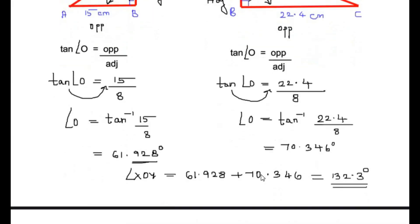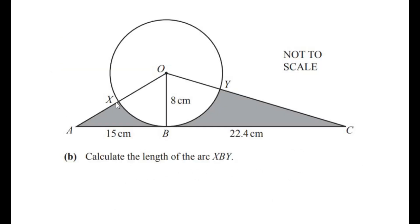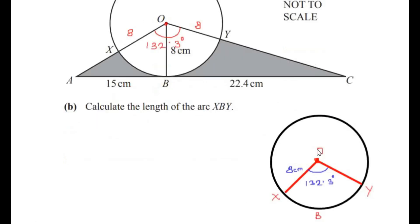Now let us move on to the second part: calculate the length of arc XBY. We can see that from point O, the arc XBY forms a sector of the given circle. The angle we found in the previous part, 132.3 degrees, acts as the central angle for sector OXBY. OB is 8 centimeters, so the radius OX and OY are both 8 centimeters. Let me draw the sector OXBY for clear understanding — we need to find the length of arc XBY.